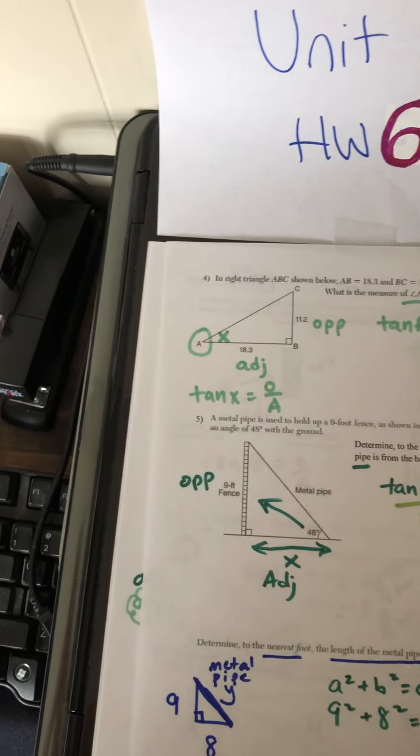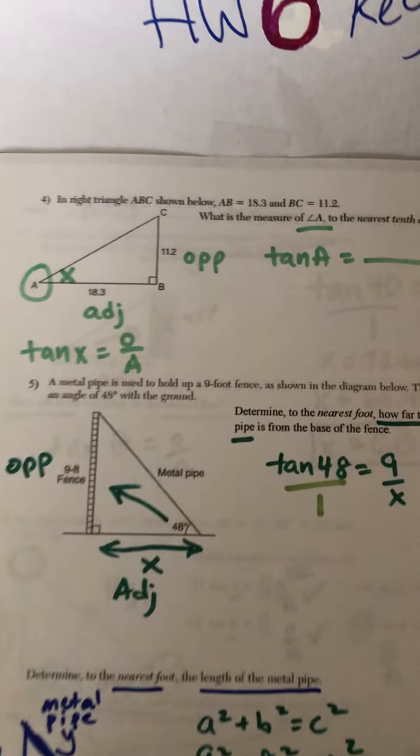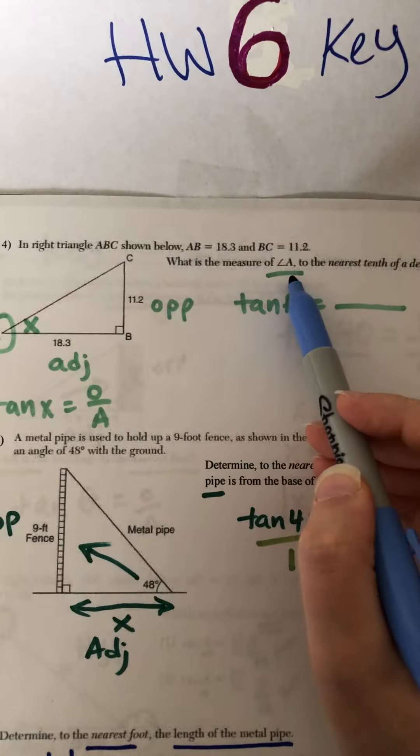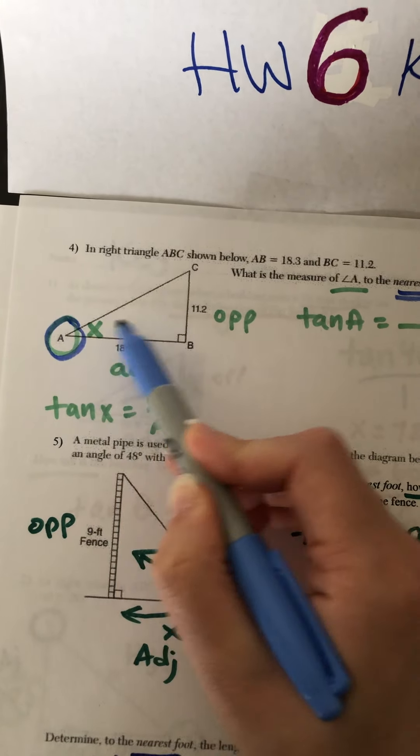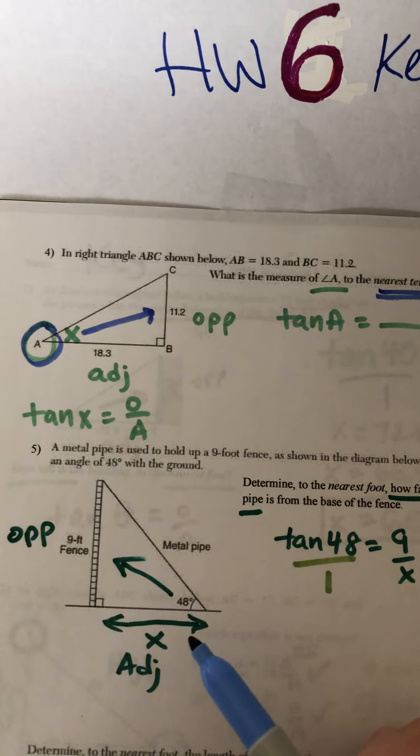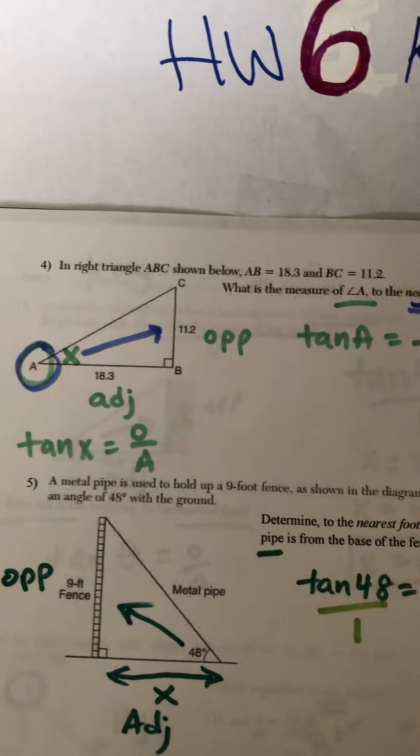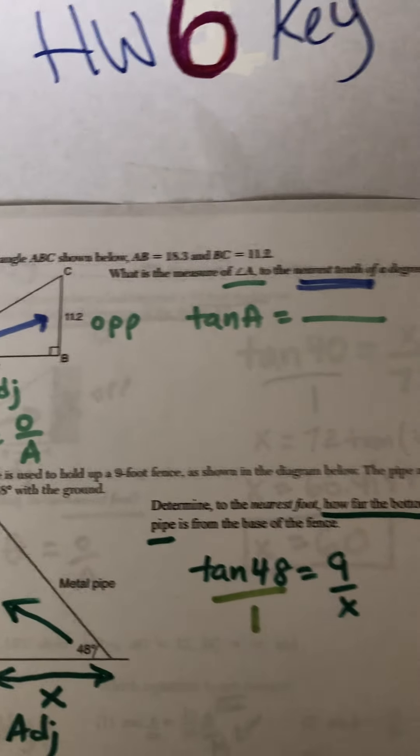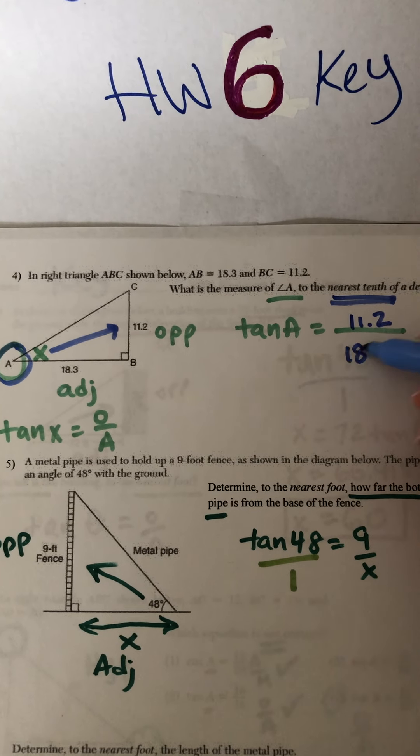Question 4. So now we're looking for the measure of angle A to the nearest tenth of a degree. X is angle A. 11.2 is opposite. 18.3 is adjacent. That means we need tan. So now we write down that tan A is equal to opposite over adjacent, the opposite side being 11.2, and the adjacent side being 18.3.